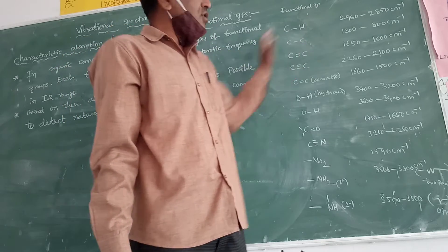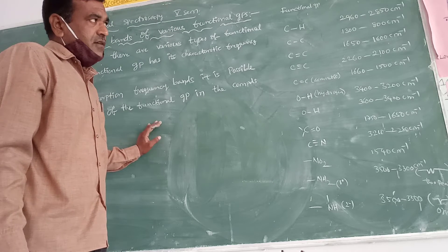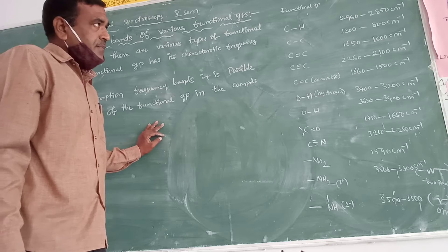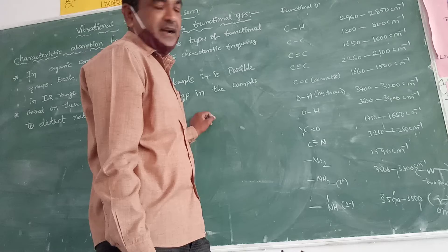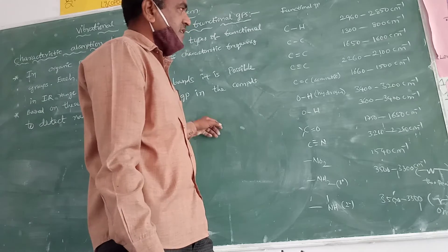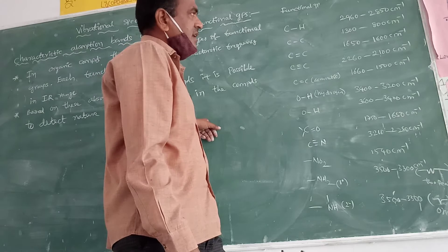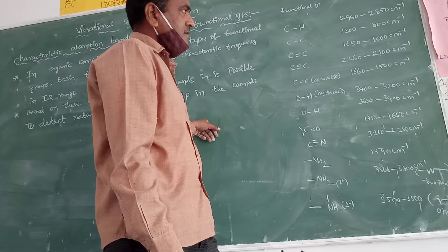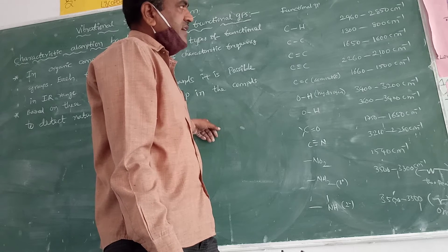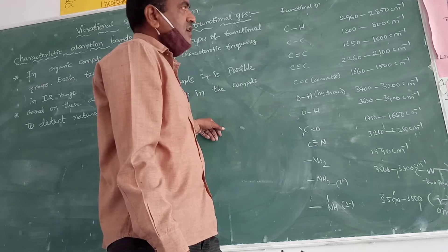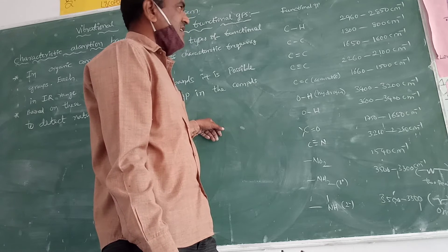Now we can study the functional groups and their fingerprint regions. The first functional group is C-H: carbon and hydrogen with a single bond. This C-H group shows an absorption frequency of 2960 to 2850 cm⁻¹.